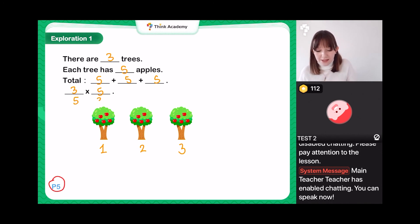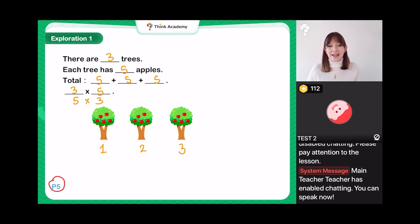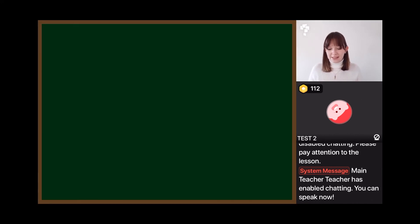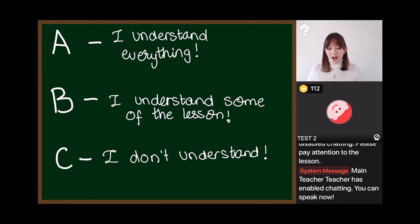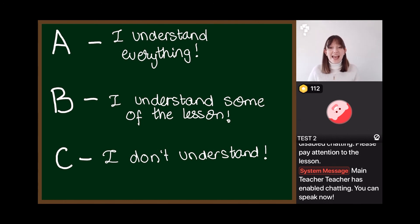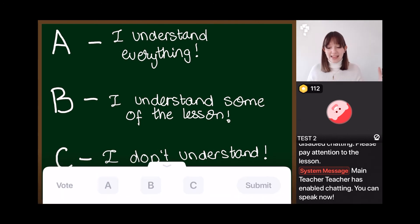We can say there are three trees times by five apples on each tree — we can do three times five, or we can write it the other way around and do five times three. So how well do we understand our first part of the class? We're going to have a vote.